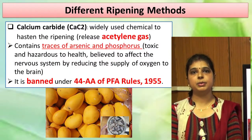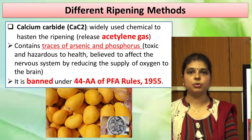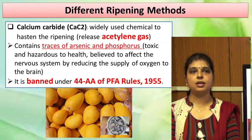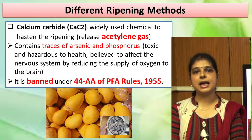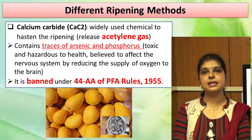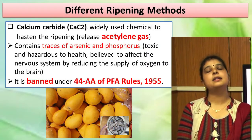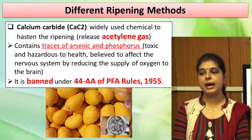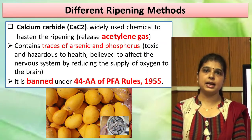For ripening unripe fruits like banana and mango, different methods are available. The most widely used compound is calcium carbide — it hastens ripening by releasing acetylene gas. However, calcium carbide has a major demerit: it affects the nervous system by reducing oxygen supply to the brain. It is now banned under Rule 44AAA of PFA Rules 1955, and it is not recommended to use calcium carbide, though it is still being used illegally.